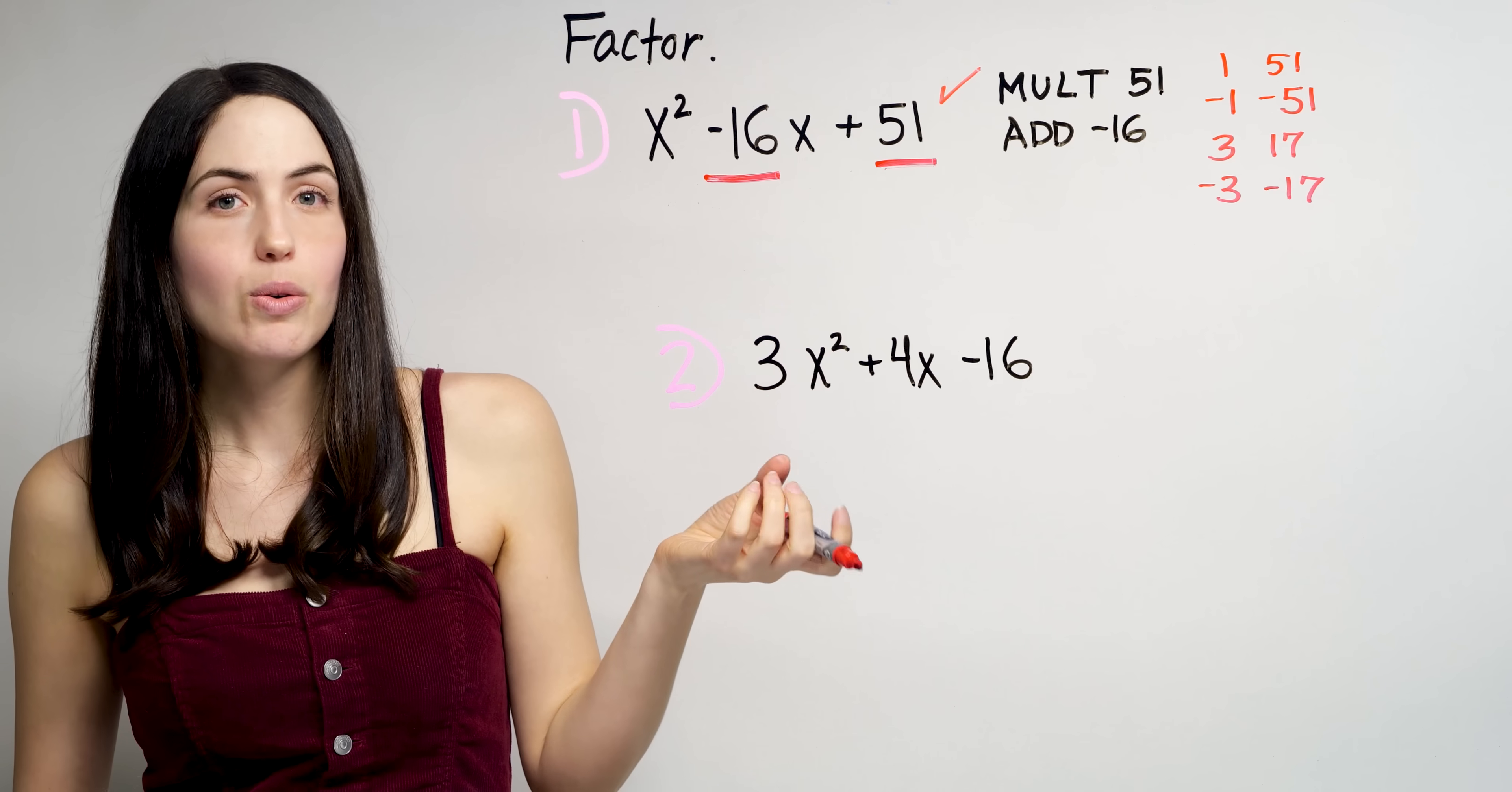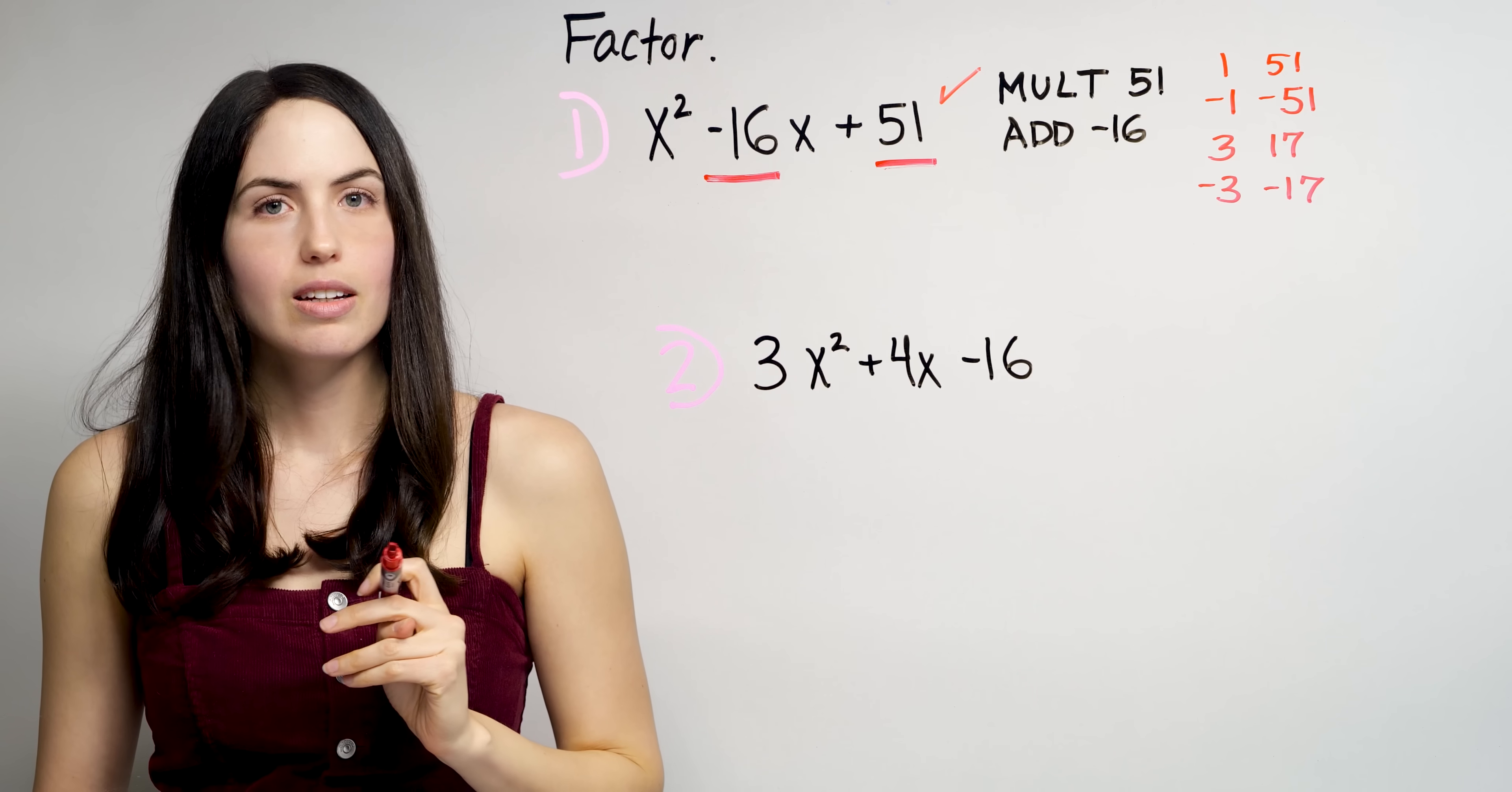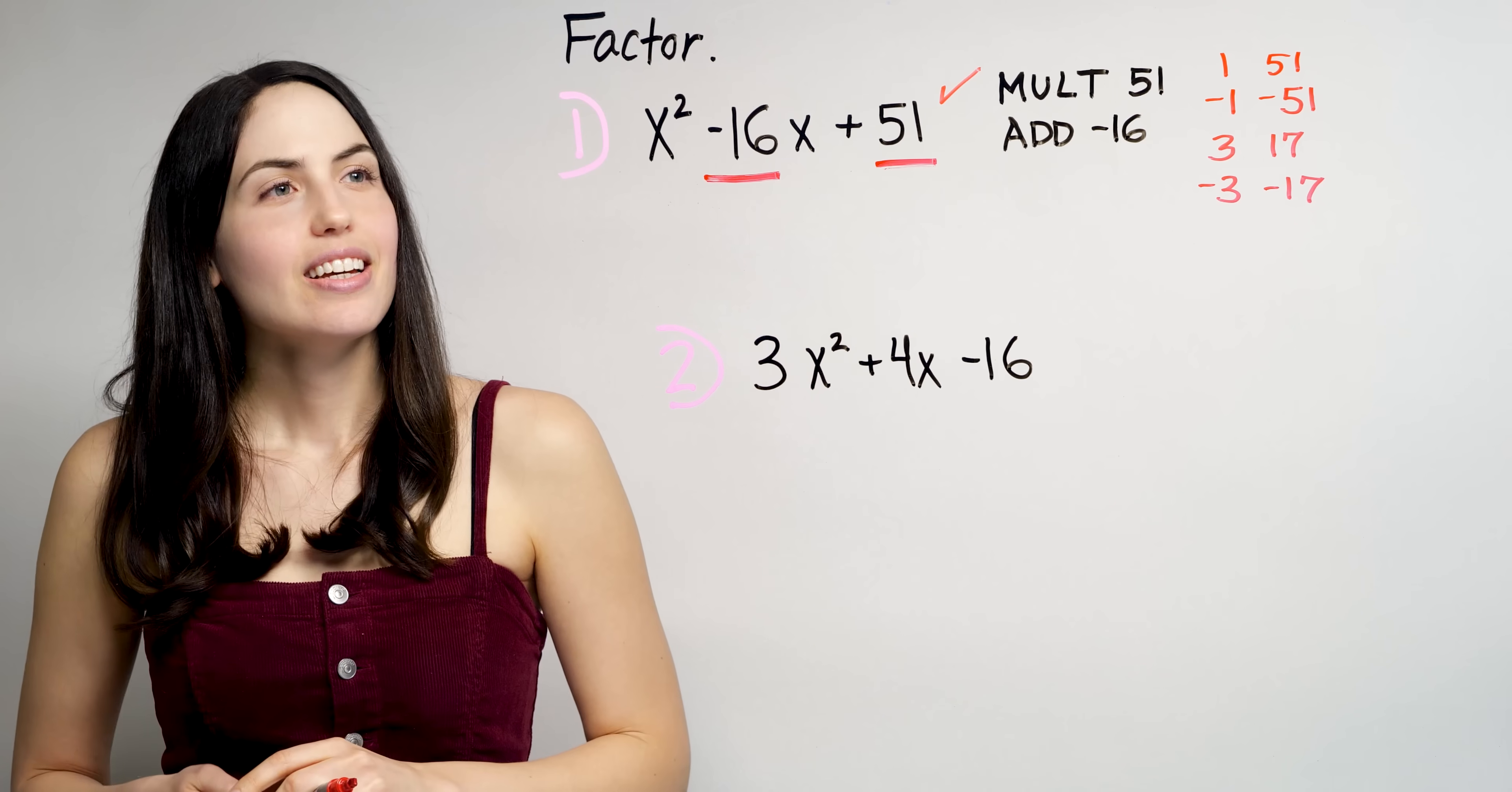And now you just gotta figure out which one of those pairs also adds to negative 16. So let's check them. These two would add to a large positive number, not negative. These two would add to negative 52, not negative 16. These would add to a positive. These would add to negative 20. Not negative 16. Actually, none of those add to negative 16. I actually don't know how to factor this one. This is embarrassing. I should probably just stop the video now. I'm kidding.